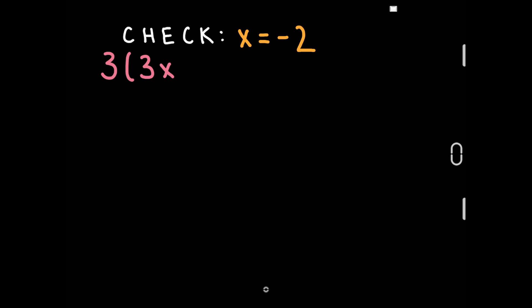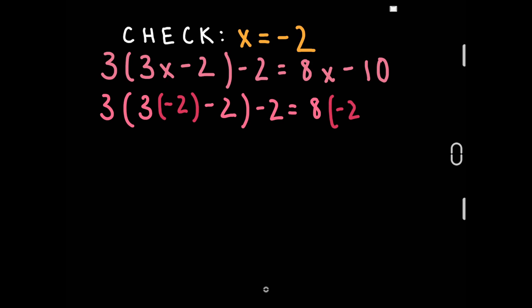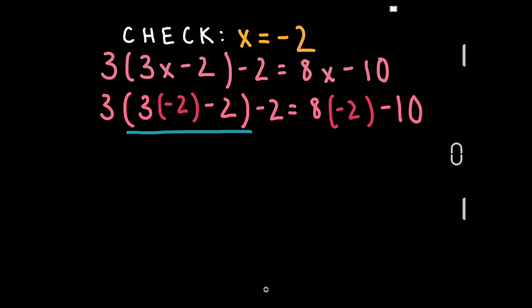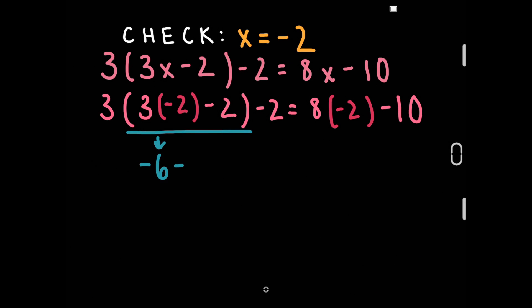Now let's check our answer. Substitute x equals negative 2 into the original equation. So now we have it here. Let's simplify the equation starting with the parentheses on the left side.